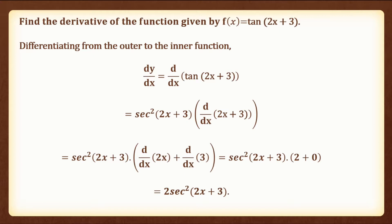d by dx of tan x would be equal to secant squared x. So d by dx of tan of 2x plus 3 is equal to secant squared 2x plus 3 into the differentiation of 2x plus 3. d by dx of 2x would be equal to 2 and d by dx of 3, which is a constant, is equal to 0. Therefore dy by dx is equal to 2 secant squared 2x plus 3.